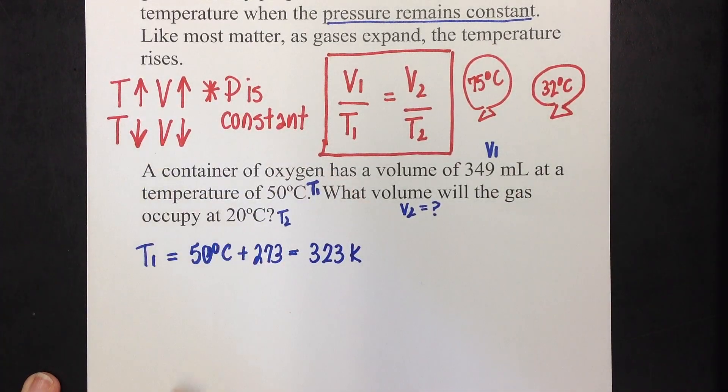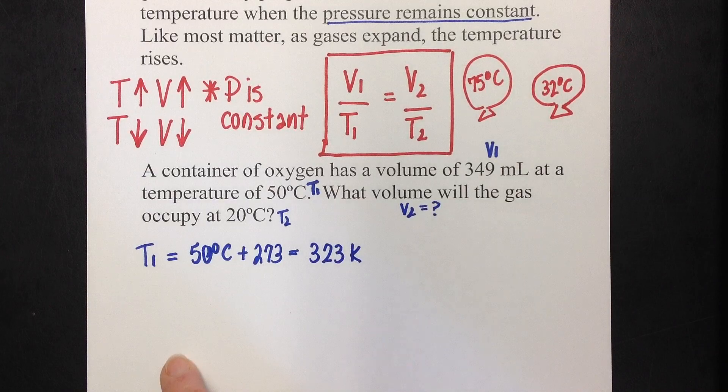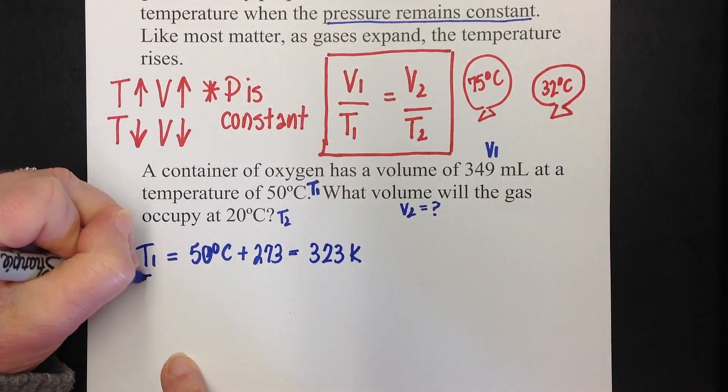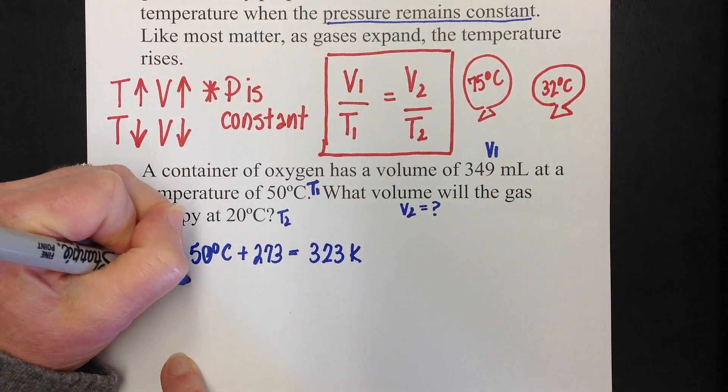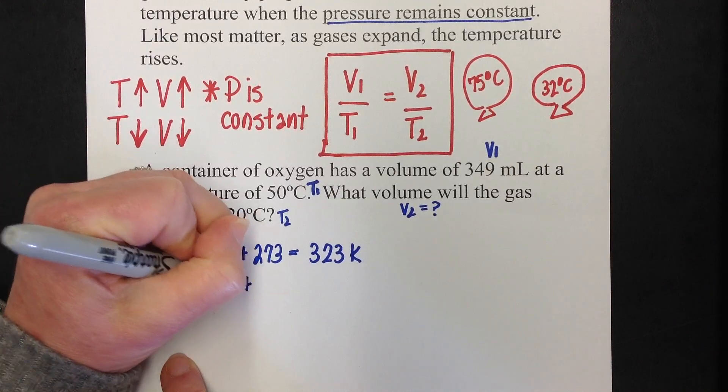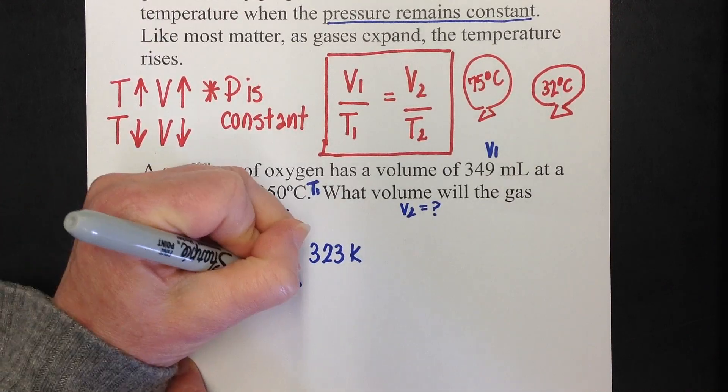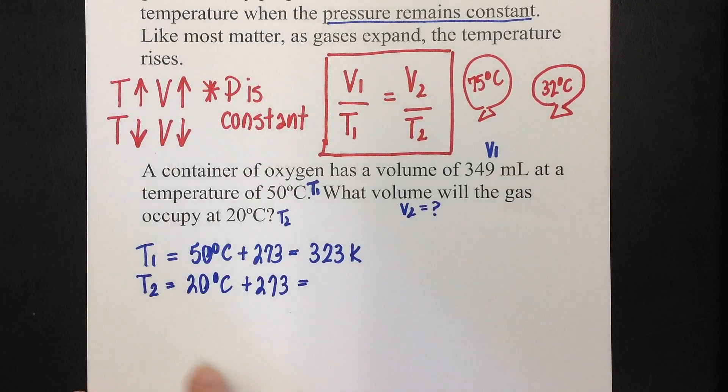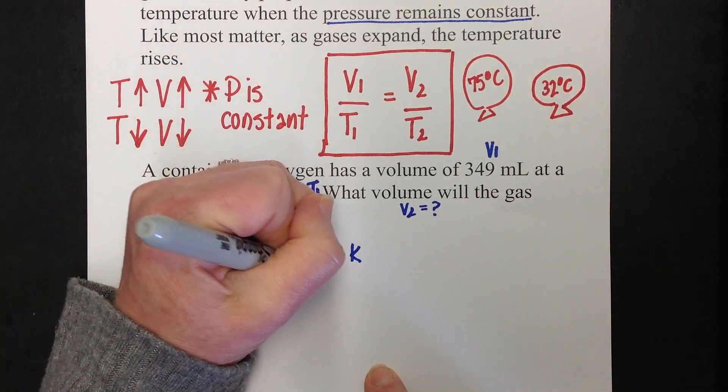And I'm going to convert this one to Kelvin too. And again, this is so I can plug it into the formula. My T2 was 20 degrees Celsius. I'm going to add that to 273. And that's going to give me 293 Kelvin.